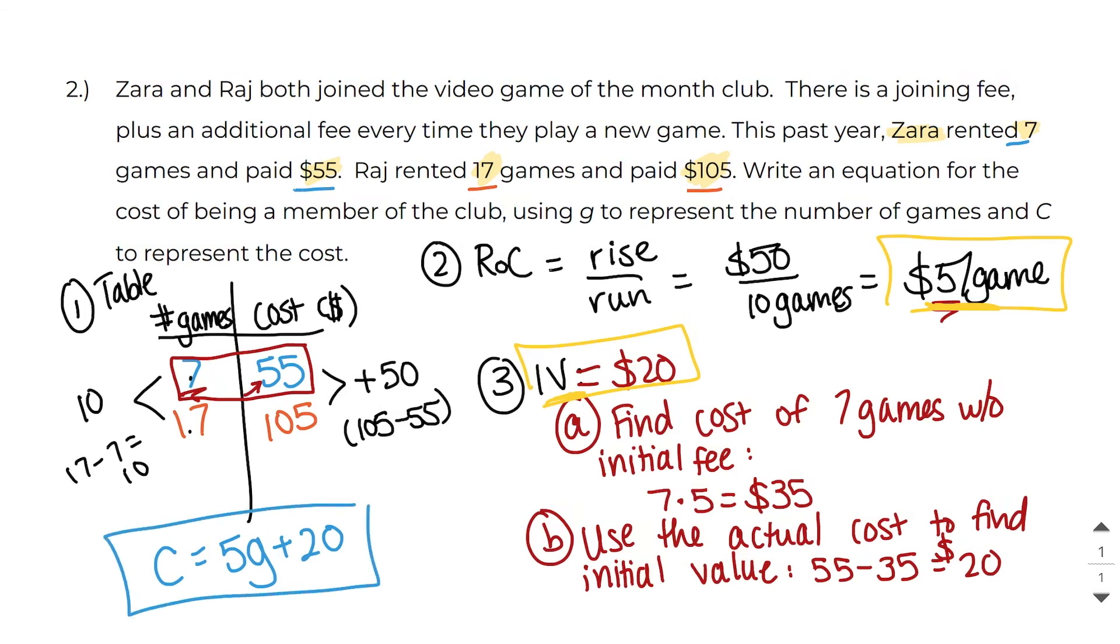Really quick note, I could have also used this 17, 105 and I would have gotten the same answer. So instead of multiplying seven by five, I would multiply 17 by five. And when I do that, I would get 85. And then I would take this 105 right here, subtract 85, and I would still get 20. So it doesn't matter which one of these points you use, as long as you're consistent. So if you're going to use seven, use 55. If you're going to use 17, use 105.